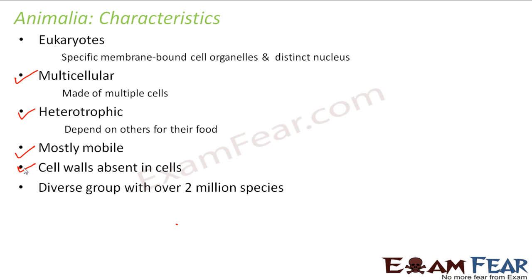Kingdom Animalia is a diverse group with over 2 million species. In this lesson, we will talk about the different groups under this kingdom. Since there are so many varieties, it is not possible to talk about each animal individually in detail, so we will divide them into different groups and talk about the characteristics of each group.